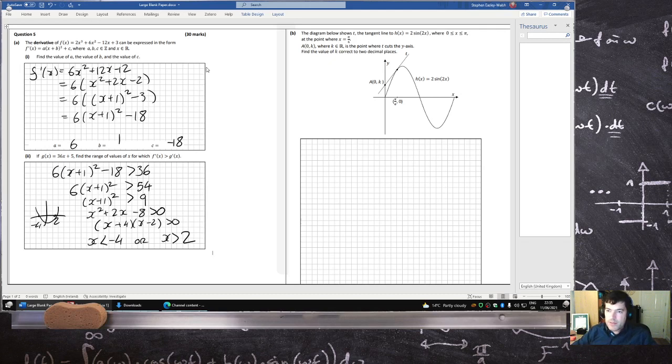So we know that x is pi over 6. So that means y is 2 times sin(2x), which is pi over 3, which is 60 degrees, which is root 3 over 2. So that's root 3. So that point there is pi over 6, root 3.